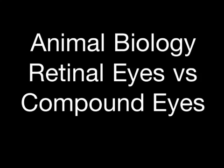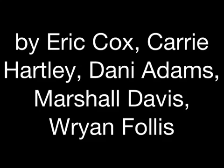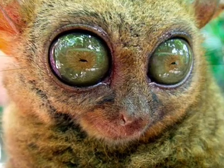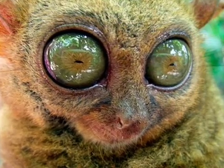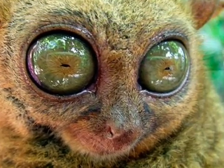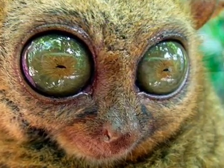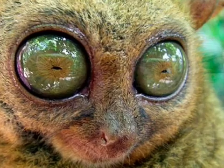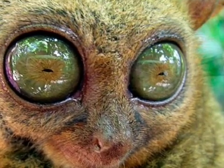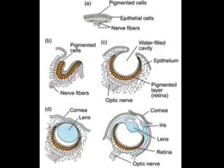Evolution of eyes is believed to occur over millions of years, beginning with simple light-detecting spots and developing into the very complex organisms seen today. They have become vital to species survival. Even Darwin knew that explaining eye evolution would be difficult, but the concept was plausible.